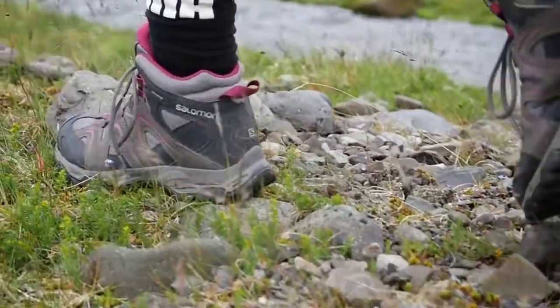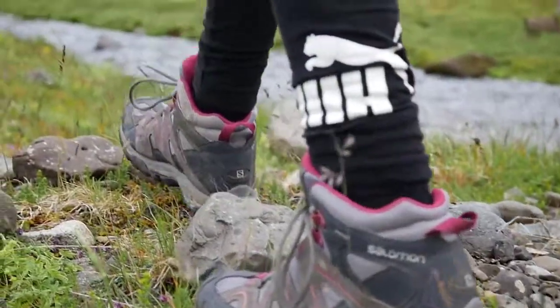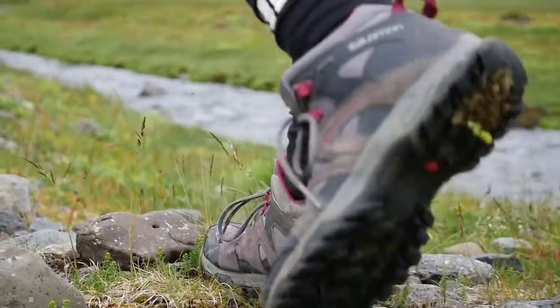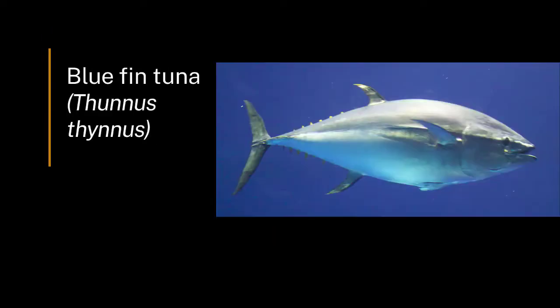Humans do a lot of actions that impact ecosystems. Direct things can be when we target a species — for example, hoobara bustards are endangered because of hunting for sport, and bluefin tuna are endangered because of overfishing. These are actions where we directly target a species.